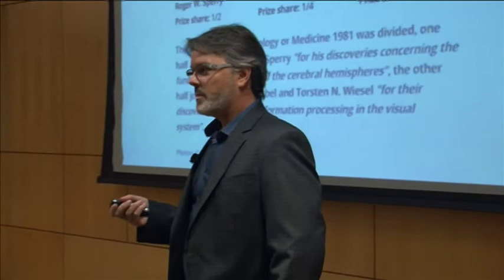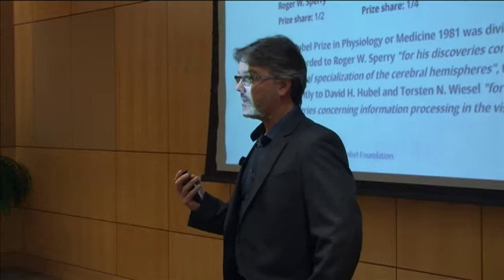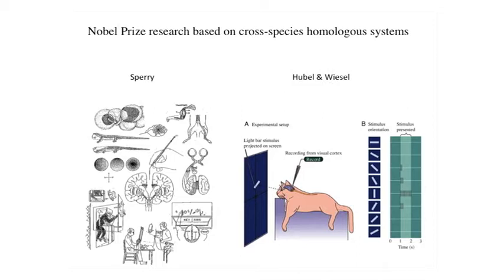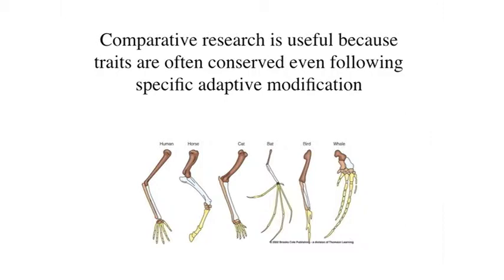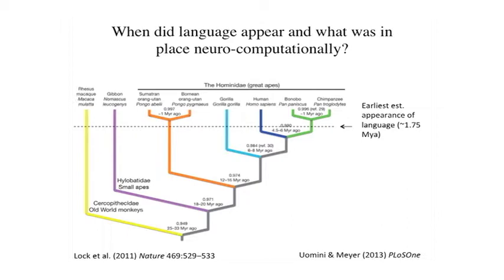We assume this applies to the primate visual system including humans, but they didn't study humans for the most part. Sperry studied primates and other animals; Hubel and Wiesel worked in the cat. They didn't win the Nobel Prize for understanding the cat system. By doing comparative research, we can take advantage of evolutionary similarities — these systems are often conserved even following specific adaptive modification, and you can still see homologies between components. It's therefore reasonable to study one model system and make inferences about another.